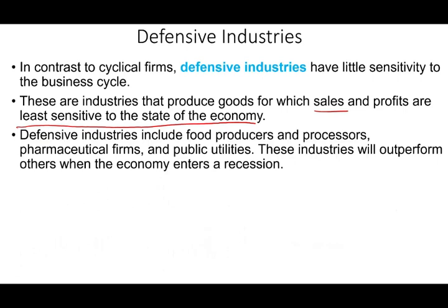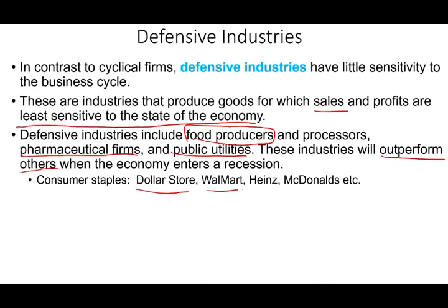Examples of defensive industries include food producers — think staple goods like spaghetti or ketchup — it doesn't matter whether we're in an expansion or recession; actually, in a recession these companies may even do better. Pharmaceutical firms — you need to buy your prescription whether we're in a recession or expansion. Public utilities: your phone bill, your electric bill. These industries actually outperform others in a recession because the professionals sell cyclicals and move into defensive companies. Specific examples: dollar stores, Walmart, Heinz ketchup, McDonald's — consumer staples that do well regardless of the economy. These stocks have betas closer to one, closer to the market.